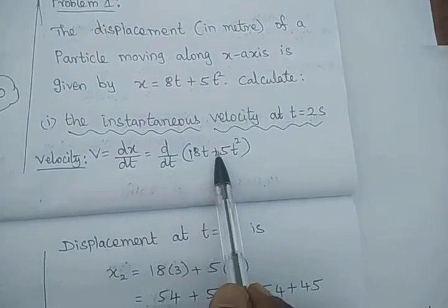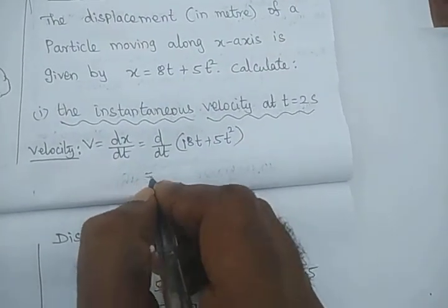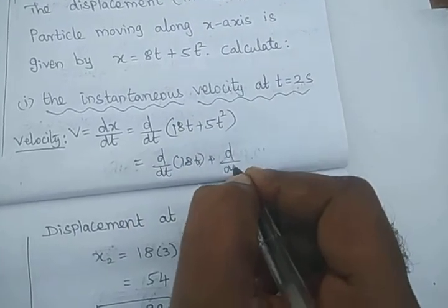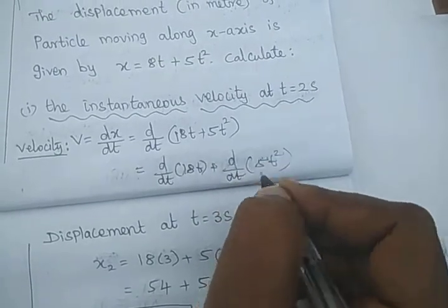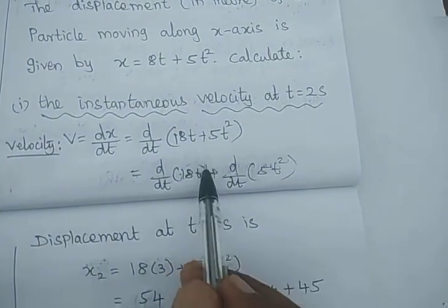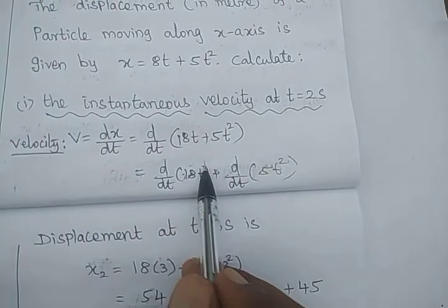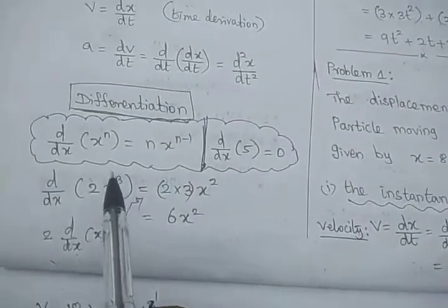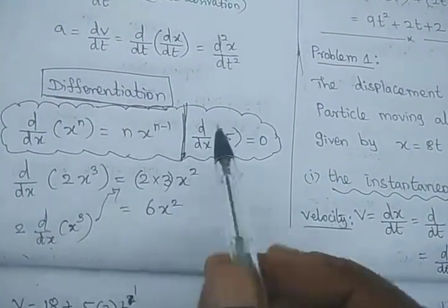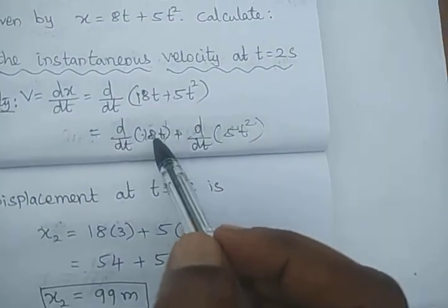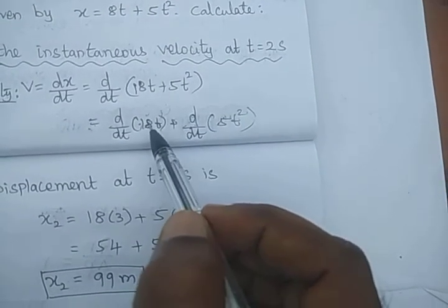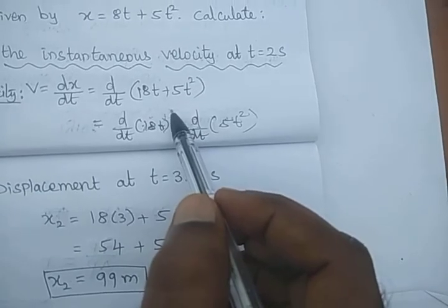We take d by dt of 18t plus 5t squared. We differentiate each term: d by dt of 18t plus d by dt of 5t squared. For d by dt of 18t, take 18 outside — it's t power 1. The differentiation formula is: d by dt of t^n equals n times t^(n-1). So 18 times 1 times t^0 gives us 18.